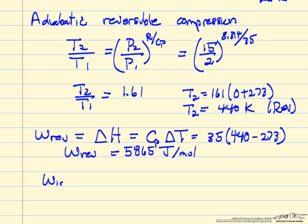So our third step now is to calculate the irreversible work. That's the reversible work over the efficiency. 5865 over 0.75.